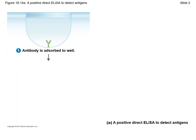A direct ELISA is used to detect antigen in a sample — any type of protein, such as a microbial antigen, a hormone, cytokines, or drugs. ELISA reactions occur in very small containers called wells.